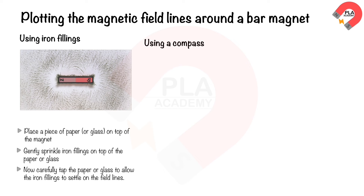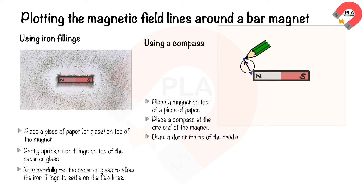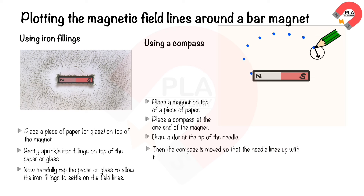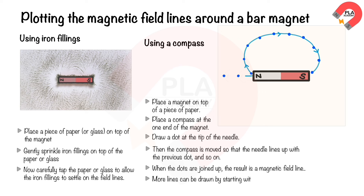Using a compass to plot field lines: place a magnet on top of a piece of paper, then place a compass at one end of the magnet and draw a dot at the tip of the needle. Move the compass so the needle lines up with the previous dot, and repeat. When the dots are joined up, the result is a magnetic field line. More lines can be drawn by starting with the compass in different positions.